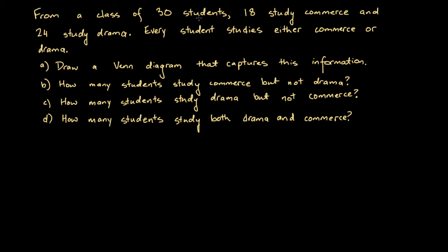From a class of 30 students, 18 study commerce and 24 study drama. Every student studies either commerce or drama. We're asked to draw a Venn diagram that captures this information. There are three more questions: How many students study commerce but not drama? How many students study drama but not commerce? How many students study both drama and commerce?